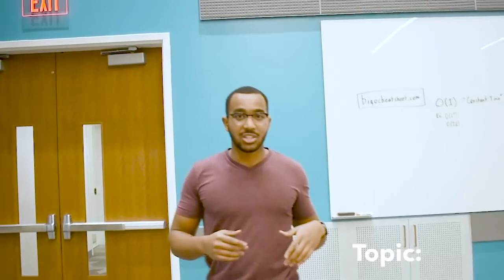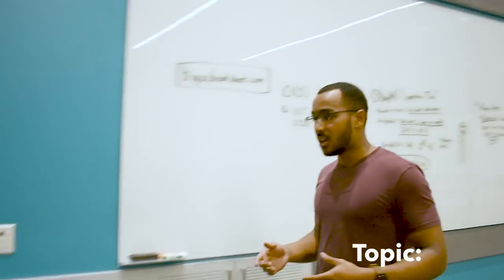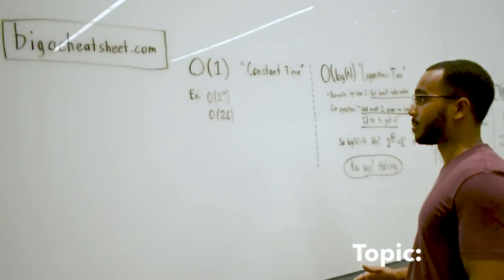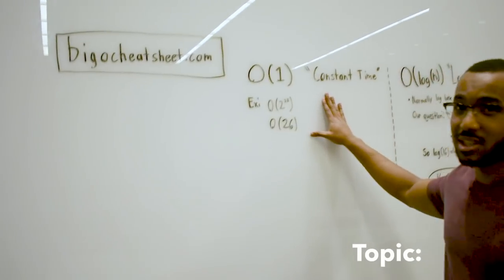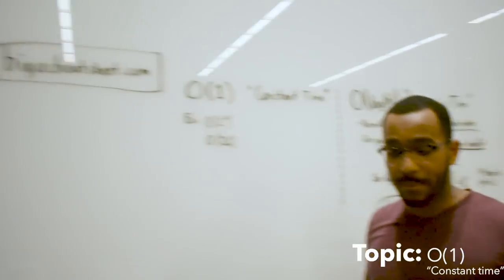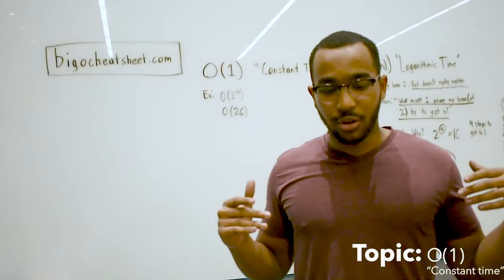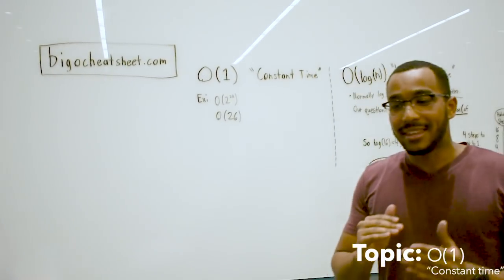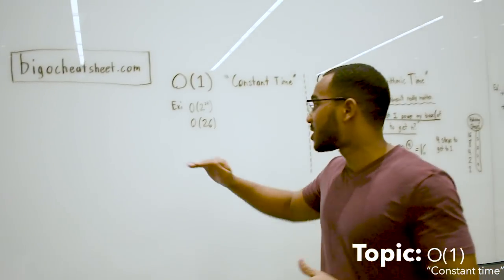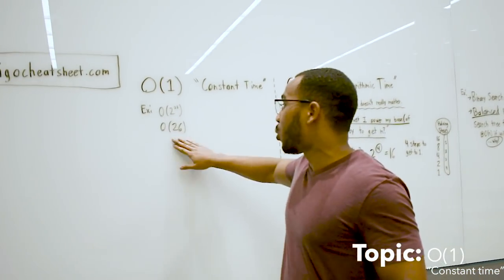Moving on, we're going to look at the common time complexities that you'll see in different kinds of problems. The first time complexity is constant time. What does constant mean? Constant time means that as an algorithm gets very, very large input, the runtime of the algorithm stays the same.